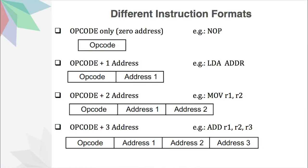Learners, let us look at the different instruction formats. The first one is where we have only the opcode and we do not have any address. An example of this is the function NOP, which is defined as no operation. So in this type of instruction format, you will only get an opcode and you will not have any addresses.